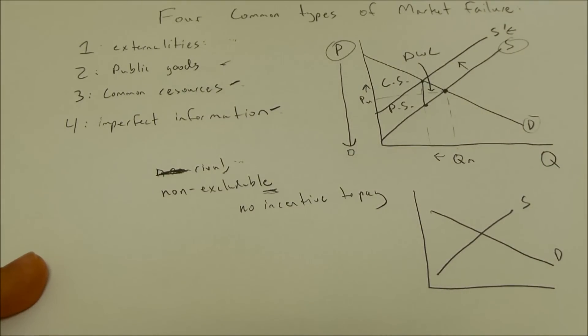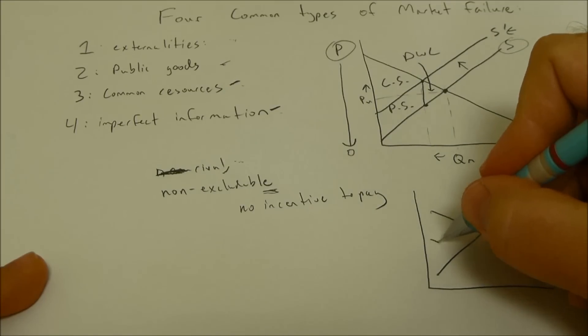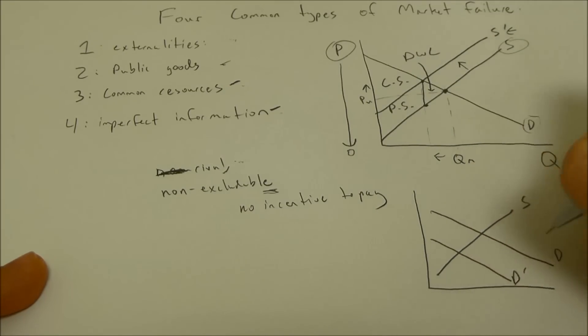We assume that perfect information is attained by both consumers and producers. So this is what the graph should look like. But let's say that suppliers know that their product is really bad and demanders don't know that. Their true demand for the inferior product would be a lot lower.